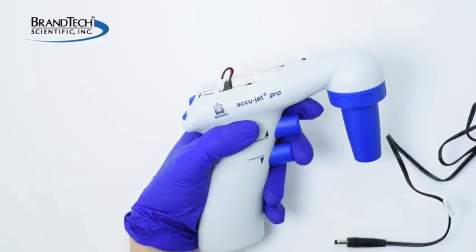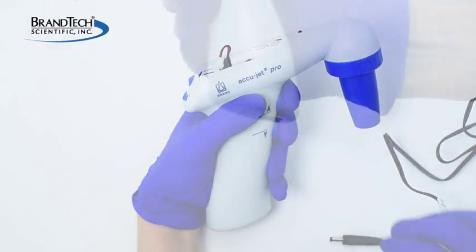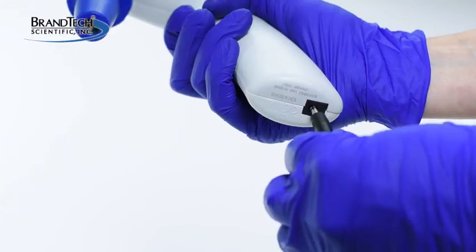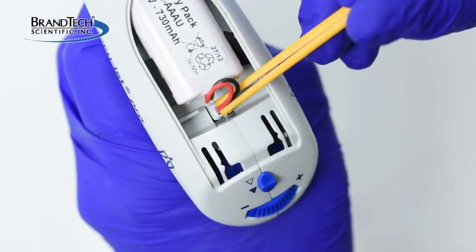Press and hold both aspirate and dispense buttons. While both buttons are depressed, plug the charger back into the AccuJet Pro, then reconnect the battery.